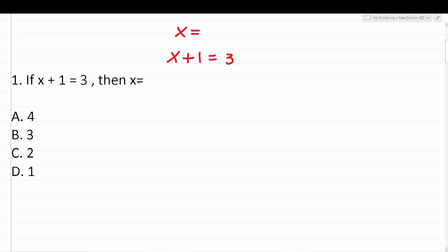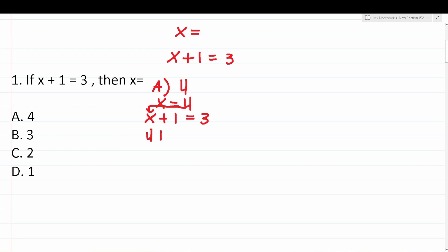One strategy you can use is simply to plug in your answer choices. Starting with a, which says four — we let x equal four and plug it into our original equation: x plus one equals three. This becomes four plus one equals three. Four plus one is five. Does five equal three? It does not. Therefore, we know a is not correct.